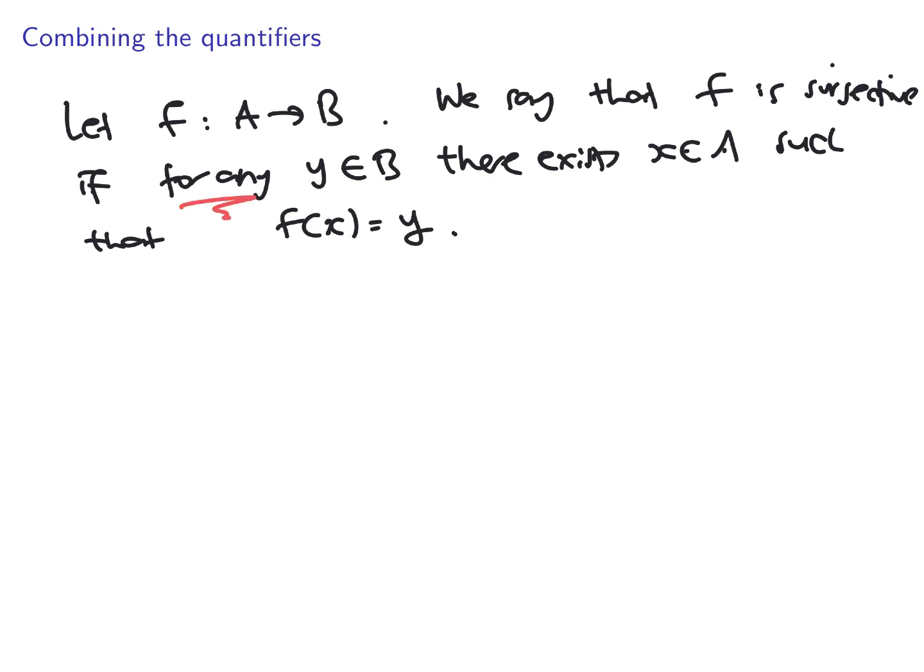There are other instances like formal definition of a limit. You will also see this kind of form. For any, there exists. And the order matters. The order of this quantifier matters. When you combine them, it's not necessarily true that you can swap the order of quantifiers.